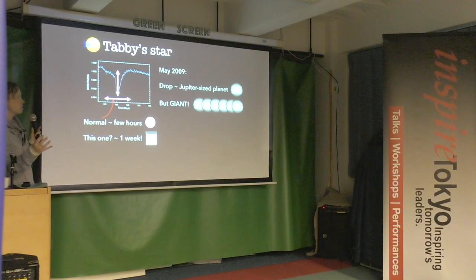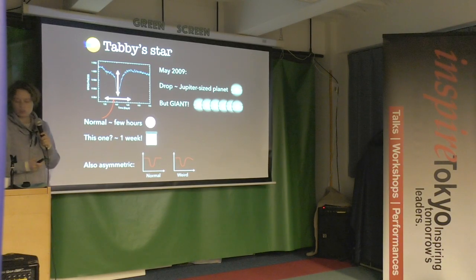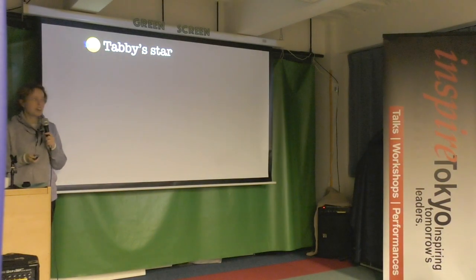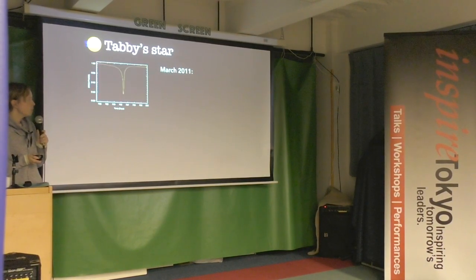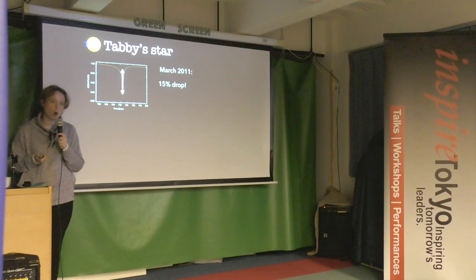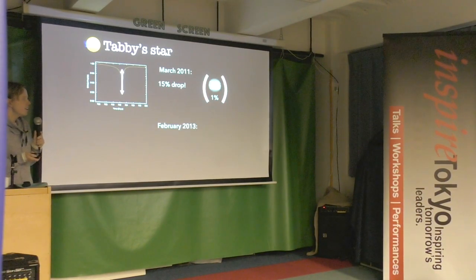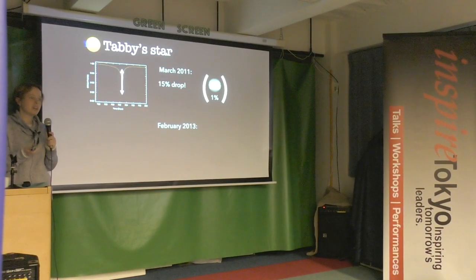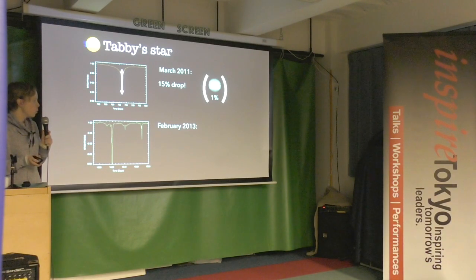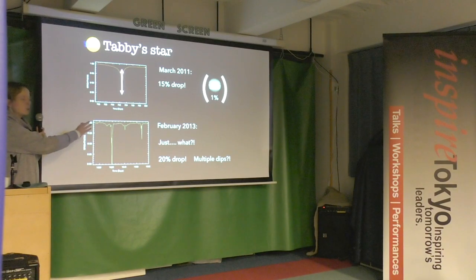The dip was also asymmetric: instead of a clean symmetric shape from a round planet, it went down, then up a bit, then weirdly down at the end — some sort of giant non-circular orbiting object. Then in March 2011, a more symmetric dip appeared around the same star, but showing a 15% drop in brightness — where Jupiter causes only 1%. Then in February 2013, a 20% drop at the center with multiple additional dips of craziness.